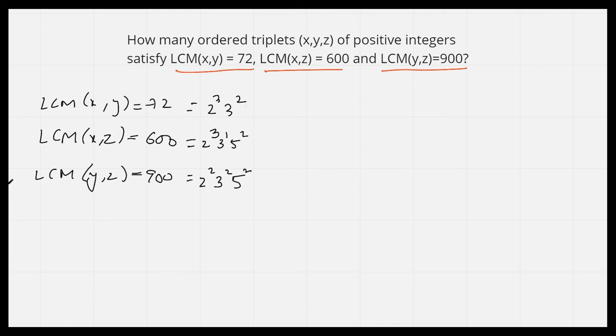We can see that in 72, the power of 5 is 0. So all of these numbers x, y, z can be represented in the form 2^a × 3^b × 5^c, since these are the only prime factors present here. Each will have values of a, b, c that are different or maybe the same.